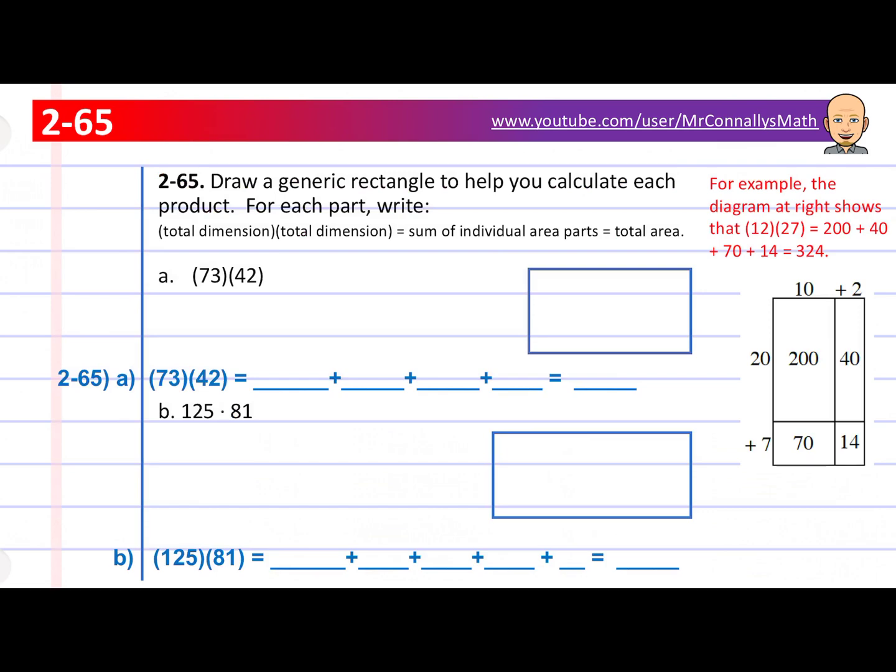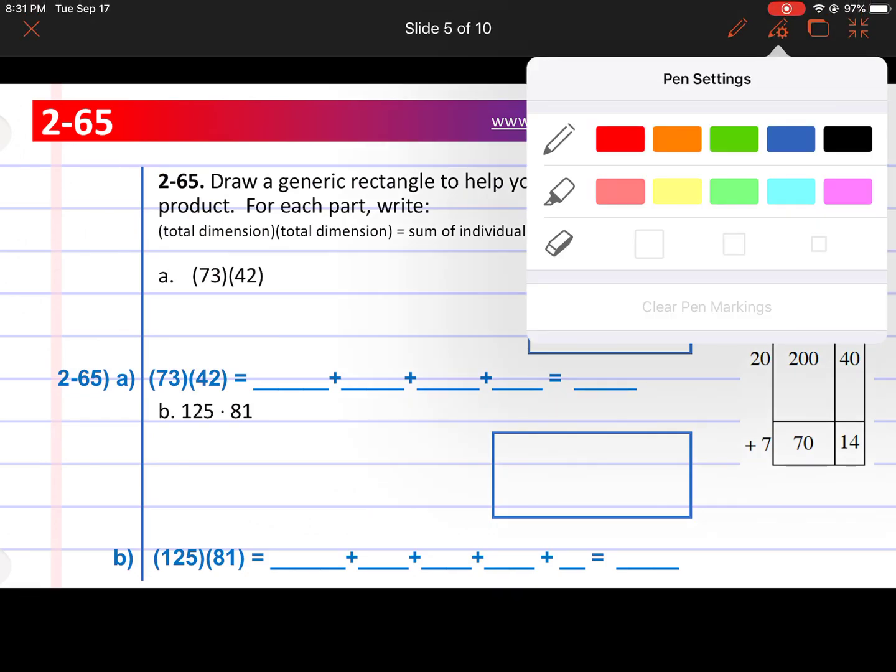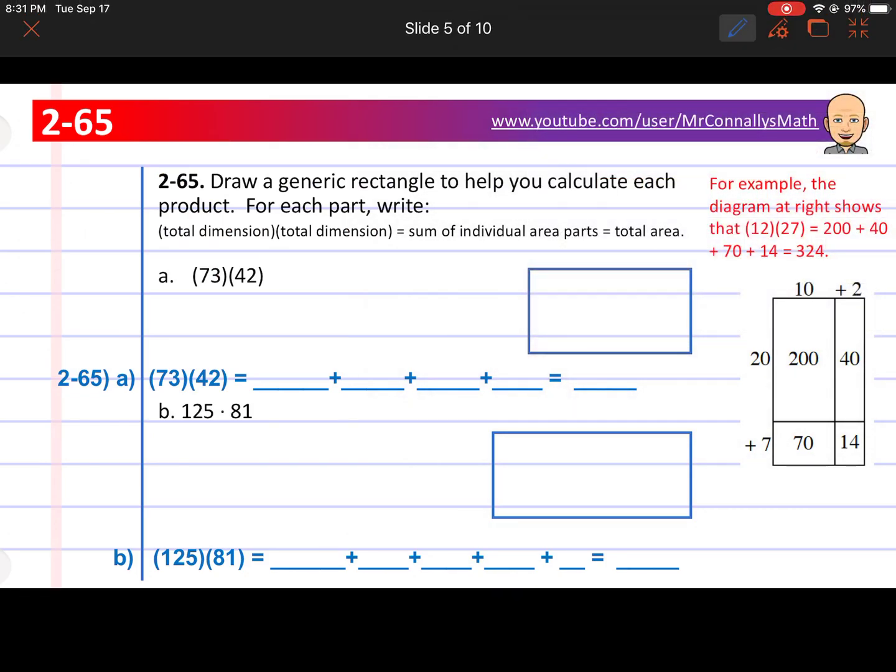Question 65. Draw a generic rectangle to help you calculate each product. For each part, write the total dimension times the total dimension equals sum of the individual area parts, which equals the total area. For example, the diagram at right shows 12 times 27 equals 200 plus 40 plus 70 plus 14 equals 324.